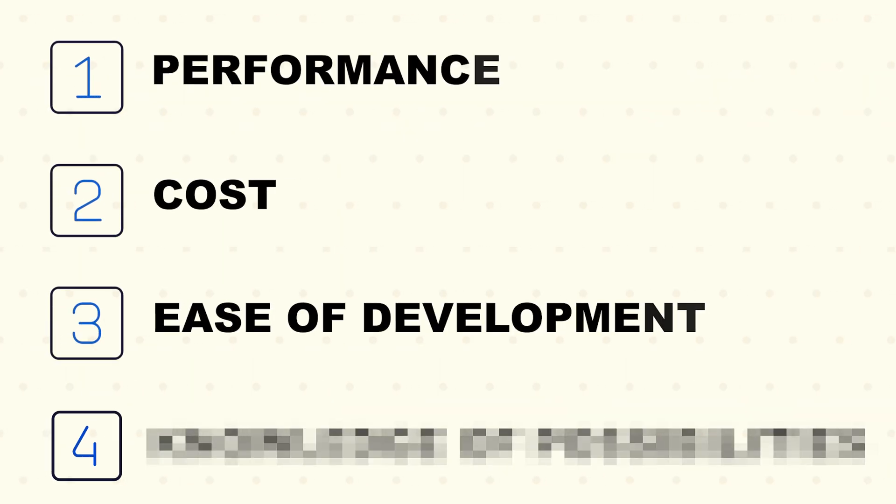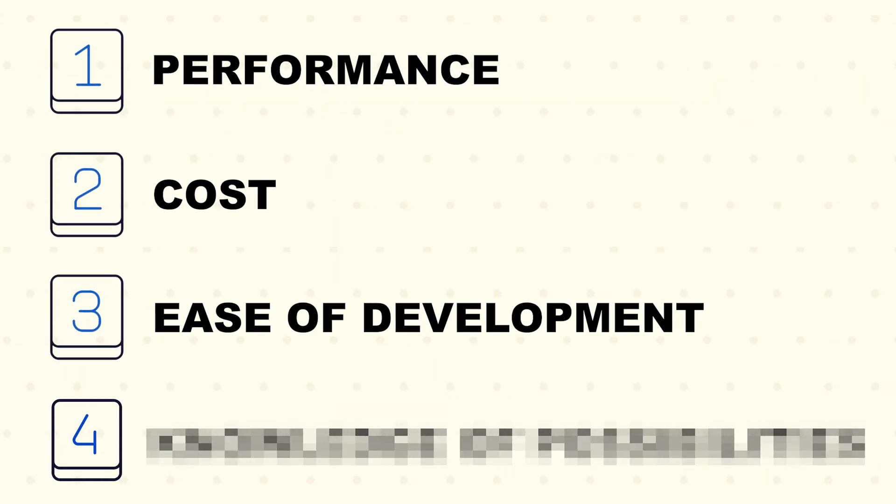The third consideration is ease of development. This basically comes down to what the developer is used to and the way they work. For some developers, it might be easier to store something in an array of objects; for another developer, it might be a hash map or something else. At the end of the day, we're all trying to build something for our end users, and there might be multiple correct answers. Choosing the right one really depends on what the developer is used to and the decision of the team.